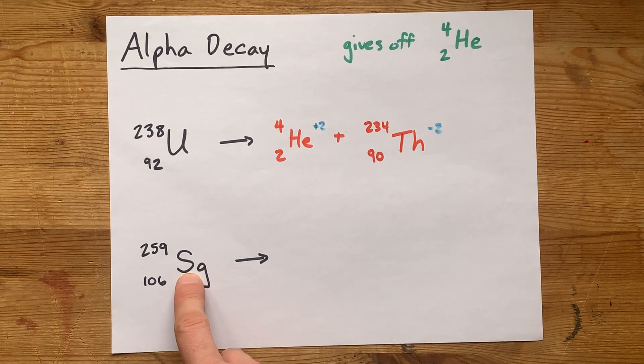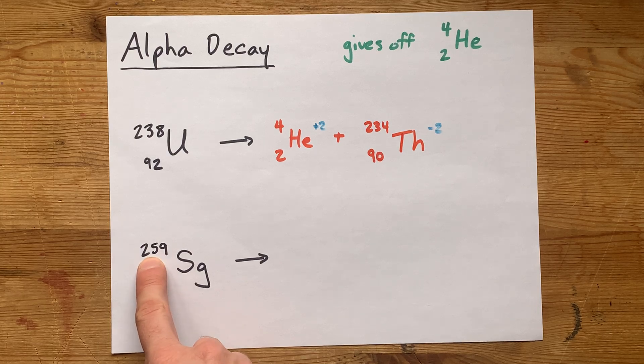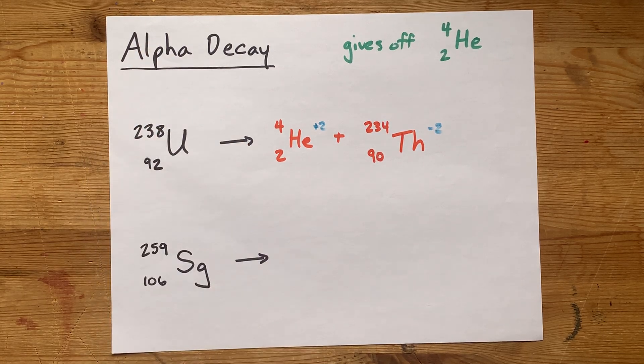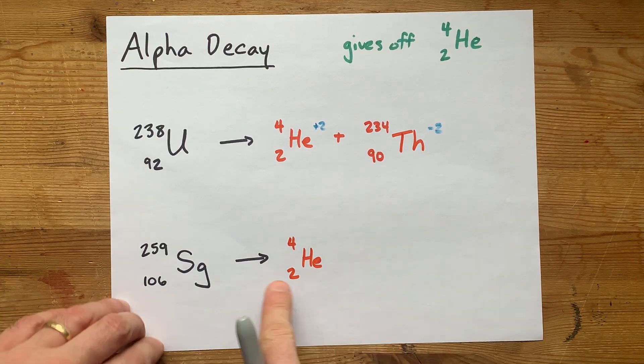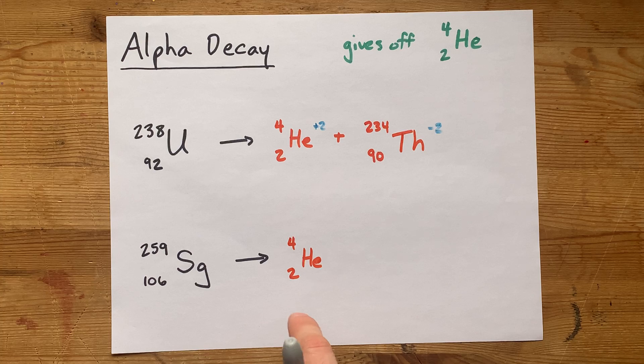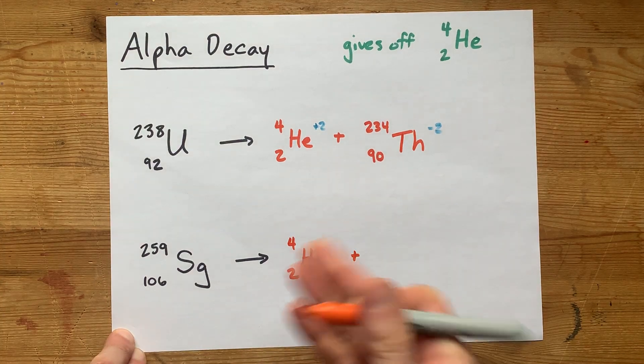Now here I have seaborgium-259, and again, if it's alpha decay, it's going to give off an alpha particle. That's He, two protons, and a mass number of 4. What are the leftovers?